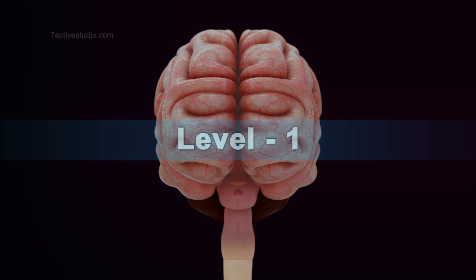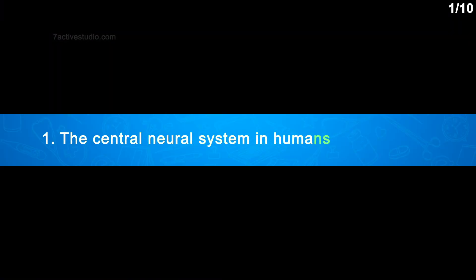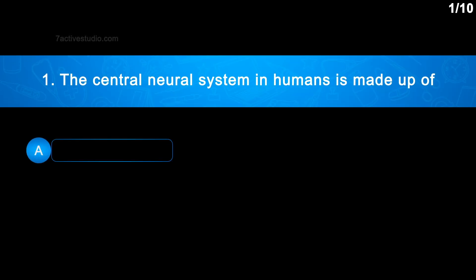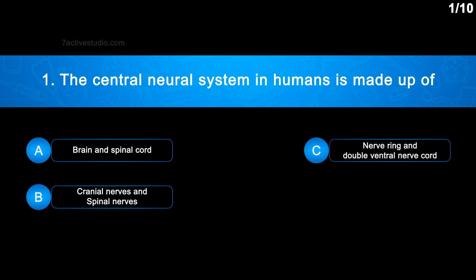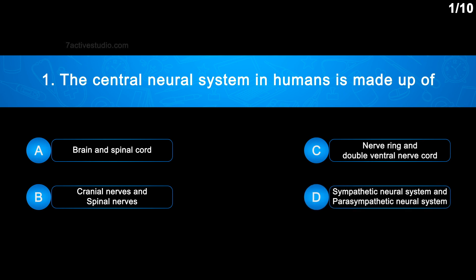Level 1, Question No. 1: The central nervous system in humans is made up of — Option A: Brain and spinal cord; Option B: Cranial nerves and spinal nerves; Option C: Nerve ring and double ventral nerve cord; Option D: Sympathetic neural system and parasympathetic neural system.